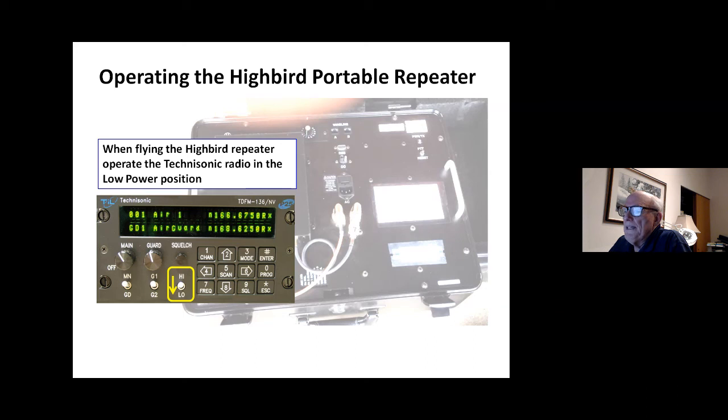Just something to remember, when flying the hybrid repeater, operate the Technasonic radio in the low power position. Just leave it down in low for as much of the communications as you can do, and only flip it up to high power in those situations where perhaps you need to avoid a climb out, take another 10 minutes to climb up and 10 minutes to drift back down to make an ops normal check. So that's the one time we're going to want to use low on the Technasonic radio, when you're also operating a hybrid portable repeater.